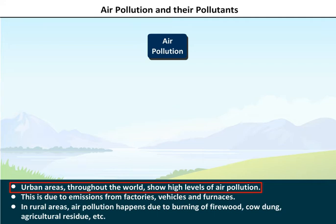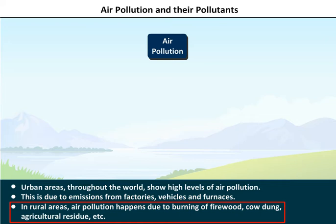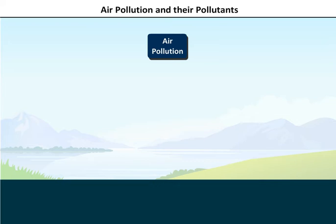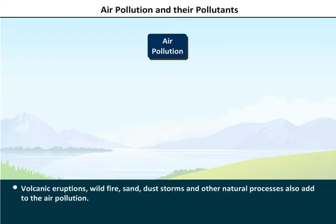High levels of air pollution in urban areas are due to emissions from factories, vehicles, and furnaces. In rural areas, air pollution happens due to burning of firewood, cow dung, agricultural residue, etc. Volcanic eruptions, wildfire, sand dust storms, and other natural processes also add to air pollution.